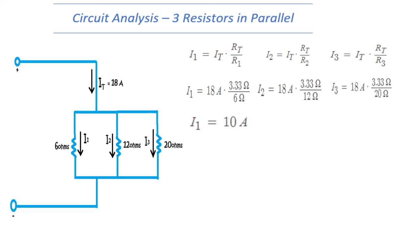We find that I1 to be 10 amps, I2 to be 5 amps and I3 to be 3 amps. This confirms our previous estimate of the smaller the resistance the larger the current, and the larger the resistance the smaller the current.